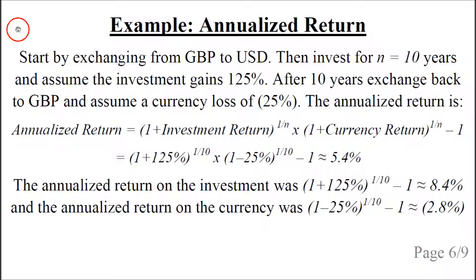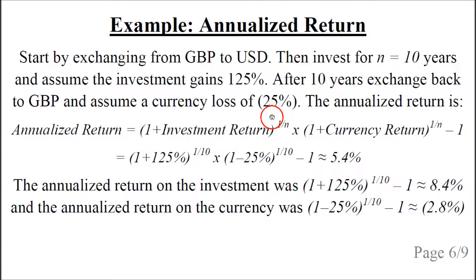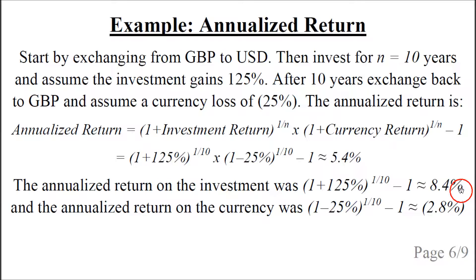Let's look at an example of how to calculate the annualized return. We start by exchanging from British pound to US dollar, then invest for 10 years, for example in a stock market index such as the S&P 500, and assume a gain of 125% in US dollar currency. After 10 years, we sell the investment and exchange the money back to British pound, assuming a currency loss of minus 25%. Plugging these numbers into the formula gives an annualized return of approximately 5.4%, where the investment contributed about 8.4% per year and the currency about minus 2.8% per year.